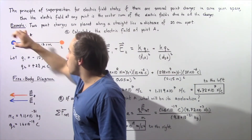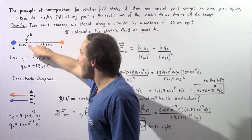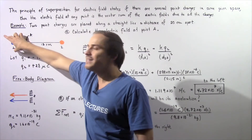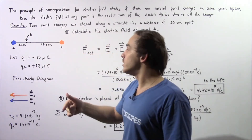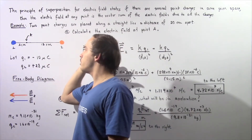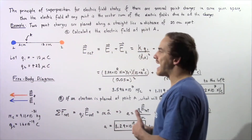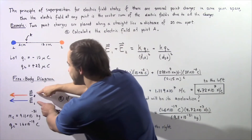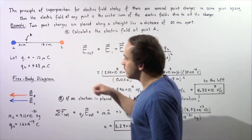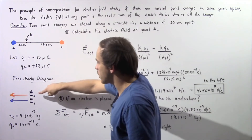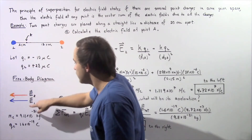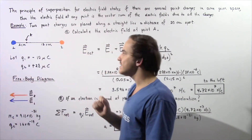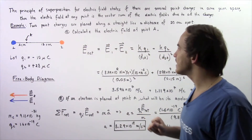Let's examine each point charge. Point charge two is positive, so the electric field it creates points away from it — which means in the negative direction along the x-axis at point A. Point charge one is negative, so the electric field it creates at point A points toward that negative charge — again in the negative direction along the x-axis. Both electric fields point in the same exact direction. We'll call the field from charge two E2, and the field from charge one E1.